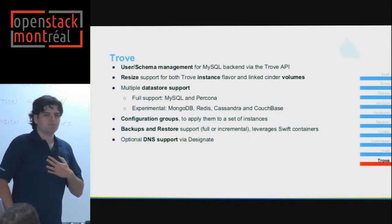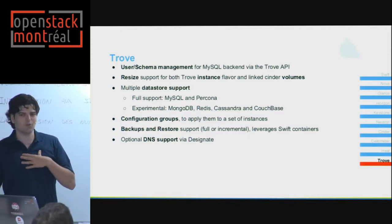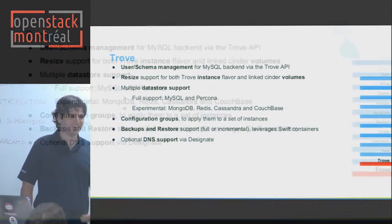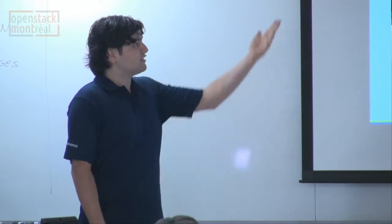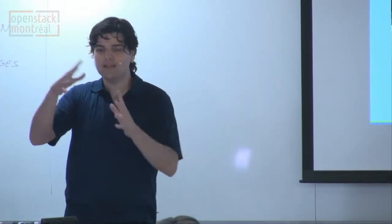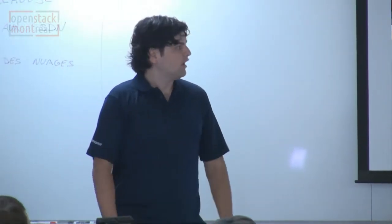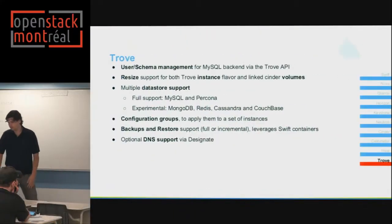Trove is particularly my favorite project — it's database as a service. I just ask Trove for a new database and it gives me a connector with a user, password, and table space. It supports a variety of backends: MySQL, Percona, MongoDB, Redis, Cassandra, and Couchbase. It handles all the sizing, auto-scaling, shrinking, and scaling out. Now it's stable and mature.